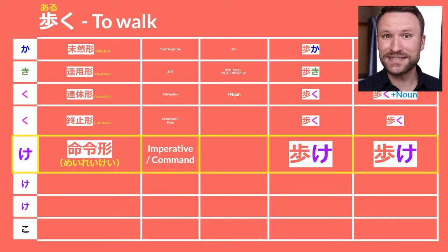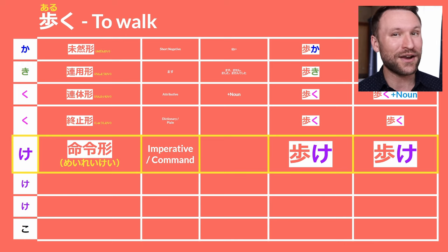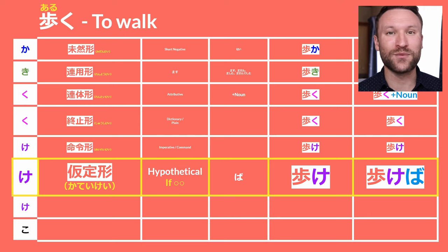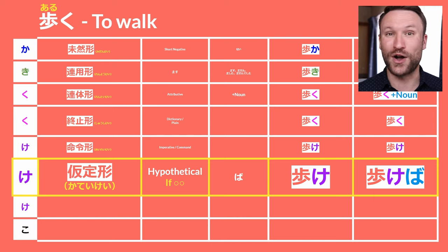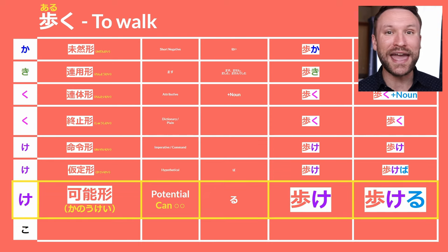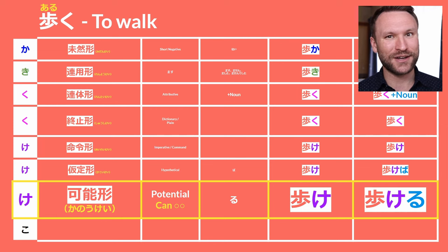Moving back down past the U column to the E column, we have three super useful conjugations. First is meireikei, or the imperative/command form: aruke — 'walk.' If we add ba after that, we get kateikei, the hypothetical form: arukeba — 'if walk' or 'if you walk.' Also in the E column is kanoukei, or the potential form. All we do is add ru: arukeru — 'can walk.'